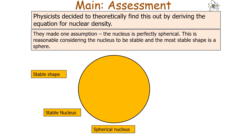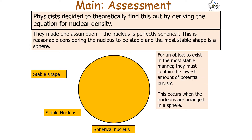In this derivation, they made one assumption: that the nucleus is perfectly spherical. This is reasonable considering that the nucleus is stable, and the most stable shape in the universe is a sphere. For an object to exist in the most stable manner, it must contain the lowest amount of potential energy, and this occurs when the nucleons are arranged in a sphere shape.